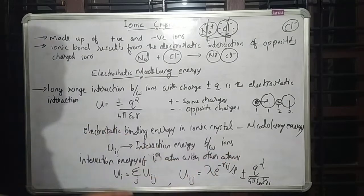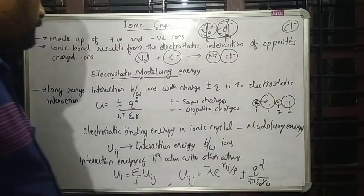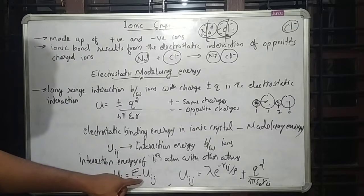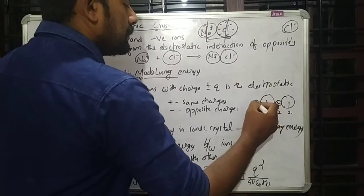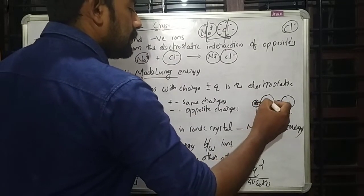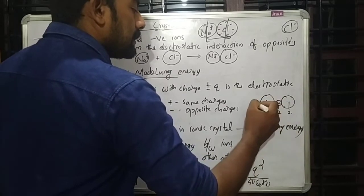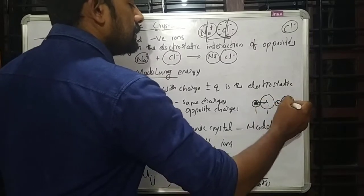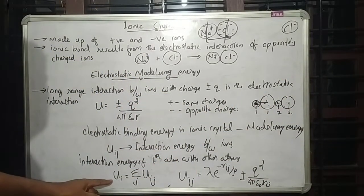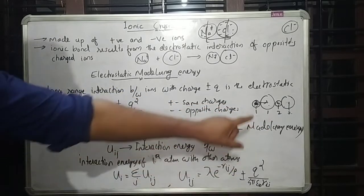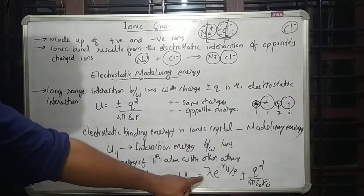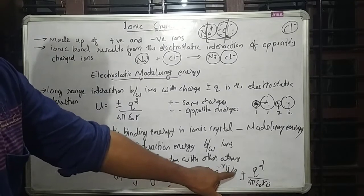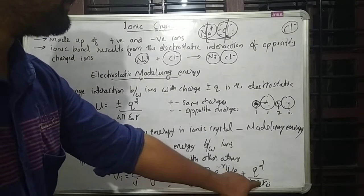The interaction energy of the ith atom with all other atoms is the sum over j of UIJ. This gives the total interaction energy between the reference atom and all surrounding atoms. UIJ can be represented as: UIJ = λ·e^(-Rij/ρ) ± Q²/4πε₀Rij, where the electrostatic interaction energy is ±Q²/4πε₀Rij, and λ·e^(-Rij/ρ) is the repulsive energy term.